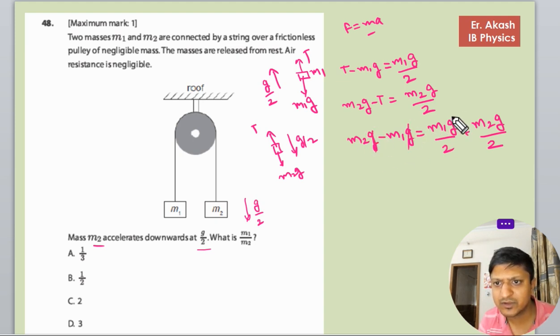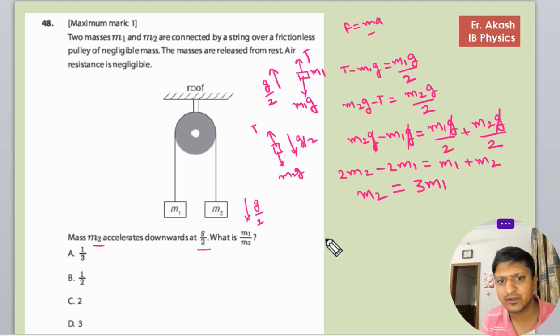Simplifying the algebra, we get M2 minus M1 equals (M1 + M2)/2. Multiplying both sides by 2 and rearranging, we find that M2 equals 3M1. So we have to find the value of M1 by M2, which will be 1/3.